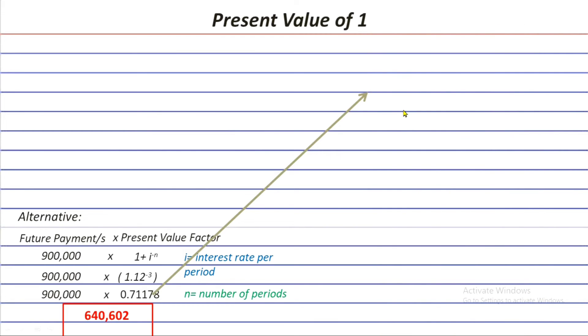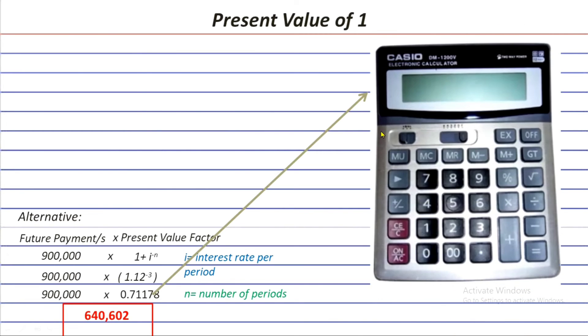But what if you only have basic calculator, just like this one? Don't worry because you can still get the present value factor in this basic calculator. And here's how you do it.